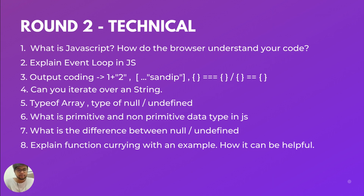After that, he asked me to explain the event loop in JavaScript — this is a very famous question and you'll find tons of answers on YouTube. He also asked output coding questions: like 1 plus '1' where one is a number and the other is a string, spread of a string, object triple equals to object, and object double equals to object. For every output question, he was expecting me to explain why it is happening, not just give the answer — so you need to have that underlying logic.